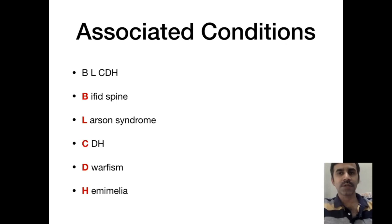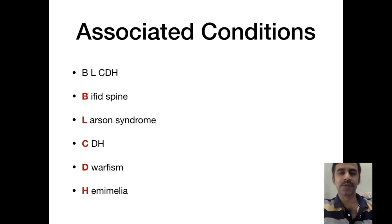Associated conditions can be summarized into another mnemonic, bilateral CDH: B means bifid spine, L means Larsen's syndrome, C means CDH, D means dwarfism, and H means hemimelia. Larsen's syndrome is a rheogenetic disorder with characteristic findings of ligamentous laxity, abnormal facial features, and multiple joint dislocations.